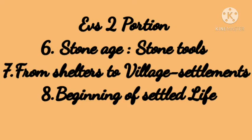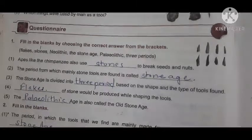Portion 4, EBS 2 subject covers Chapter 6: Stone Age and Stone Tools, Chapter 7: From Shelter to Village Settlements, and Chapter 8: Beginning of Settler Life. Students, I have completed all my EBS 2 portion. We have to revise our lessons for the second unit. So here goes the revision — let's start.